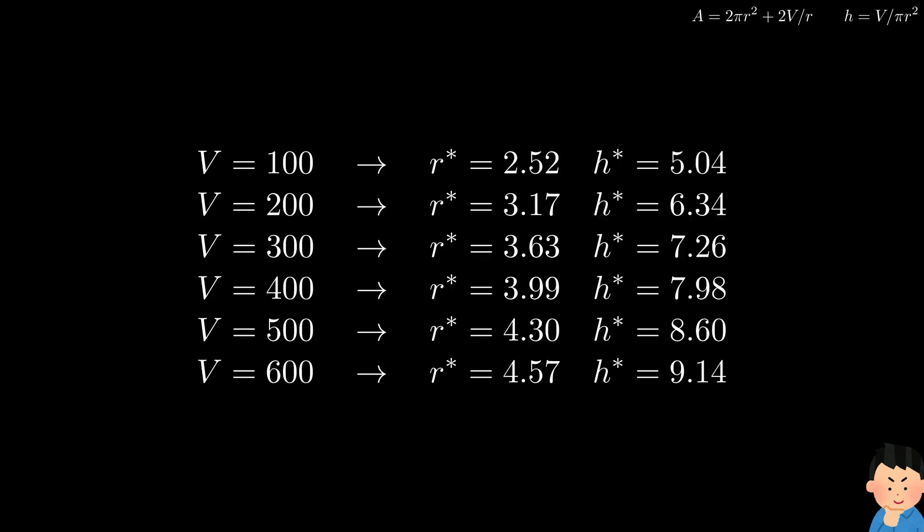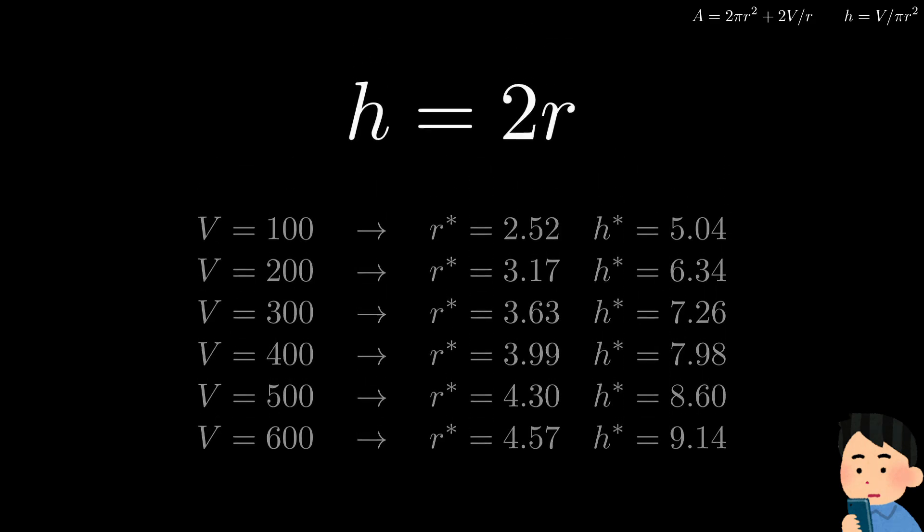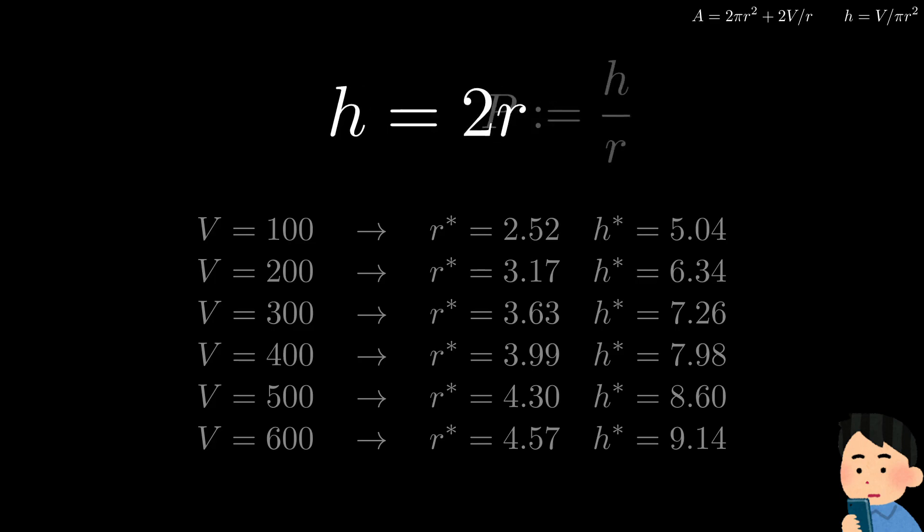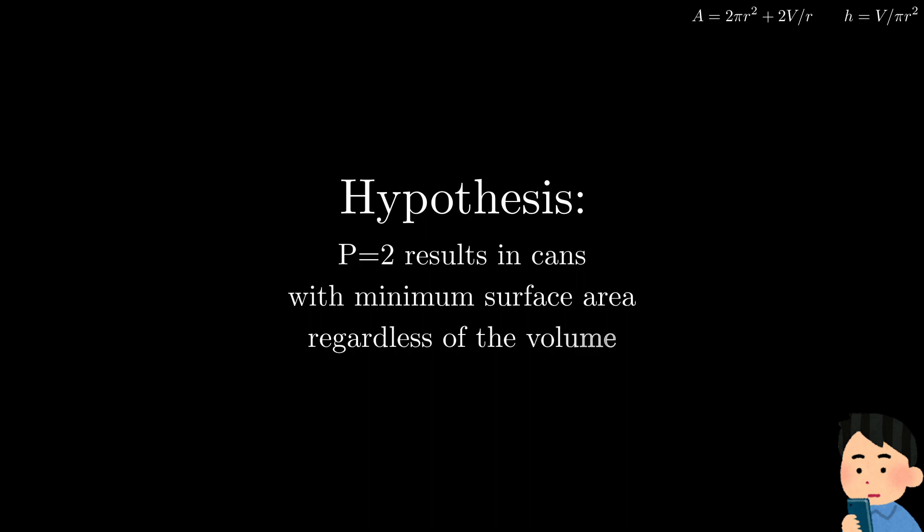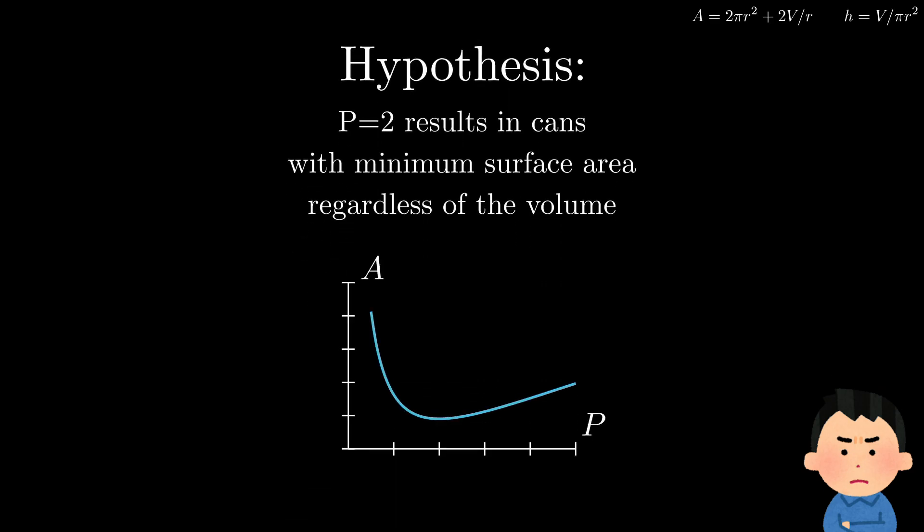Looking at the result, can you see any pattern? Feel free to just pause the video if you want to think about it first. Okay, so the pattern is, in every case that we observe so far, the height of the can is always twice the radius. Now, let me introduce the new variable called p from proportion, which is equal to the height over the radius of the can. With that new definition and our observation, we now write down our hypothesis that the cans with p equal to 2 have minimum surface area, regardless of the volume. And as for how to prove it, we will plot p against the surface area. If our hypothesis is true, then the curve will always have its lowest point at p equal to 2, no matter what the volume is.